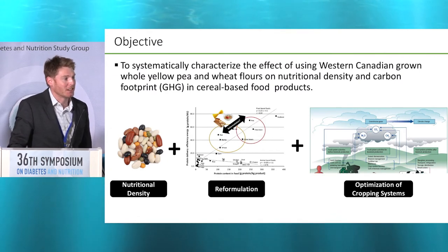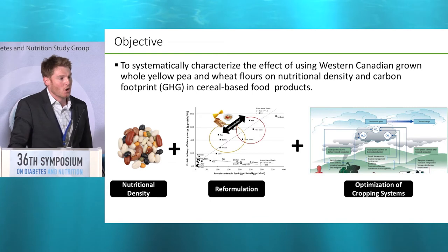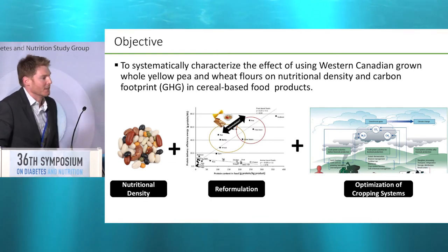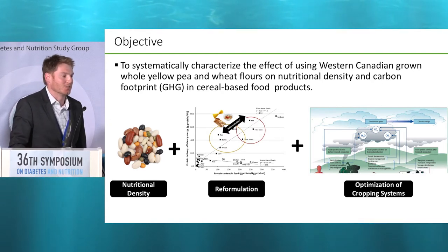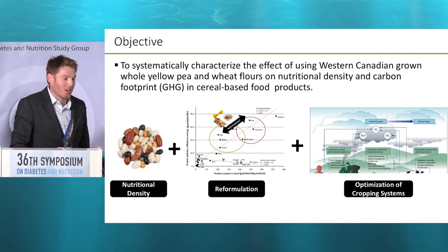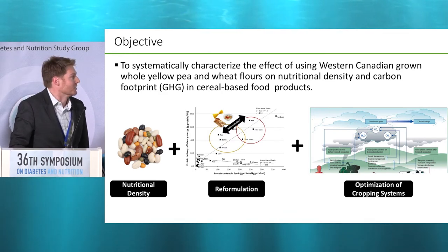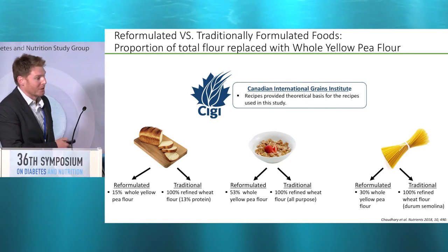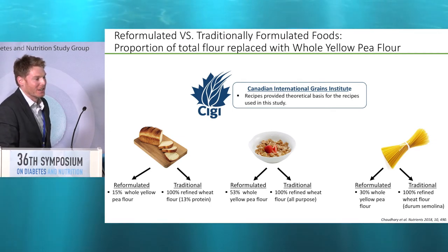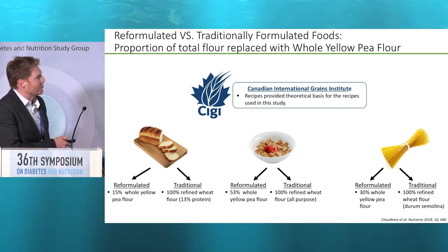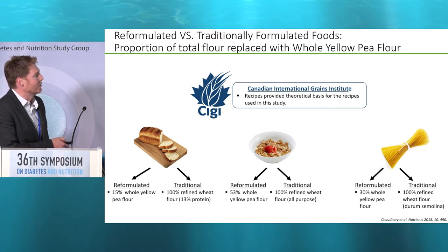The objective of this study was to systematically characterize the effect of using Western Canadian grown yellow pea and wheat flours on nutrient density and carbon footprint in cereal-based foods. In this analysis we looked at nutrient density in the context of reformulation of cereal-based foods within the context of optimizing cropping systems. We used formulations produced by the Canadian International Grains Institute — actual formulations where refined wheat flour in bread, breakfast cereal, and pasta were displaced by whole yellow pea flour.